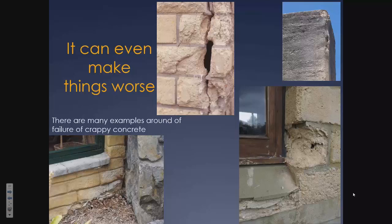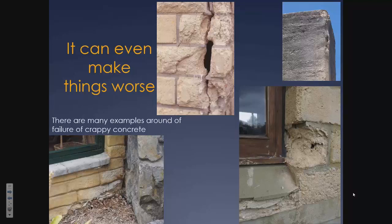Adding cement doesn't fix things — it can even make things worse. There are many examples of failure from cement-stabilised earth. I think using a very high-energy-intensive material to stabilise earth is not the best use of that material. We've had complete building failures with cement-stabilised material that got wet — wind-driven rain has driven water inside the material, the clay expanded, and just blew things apart.